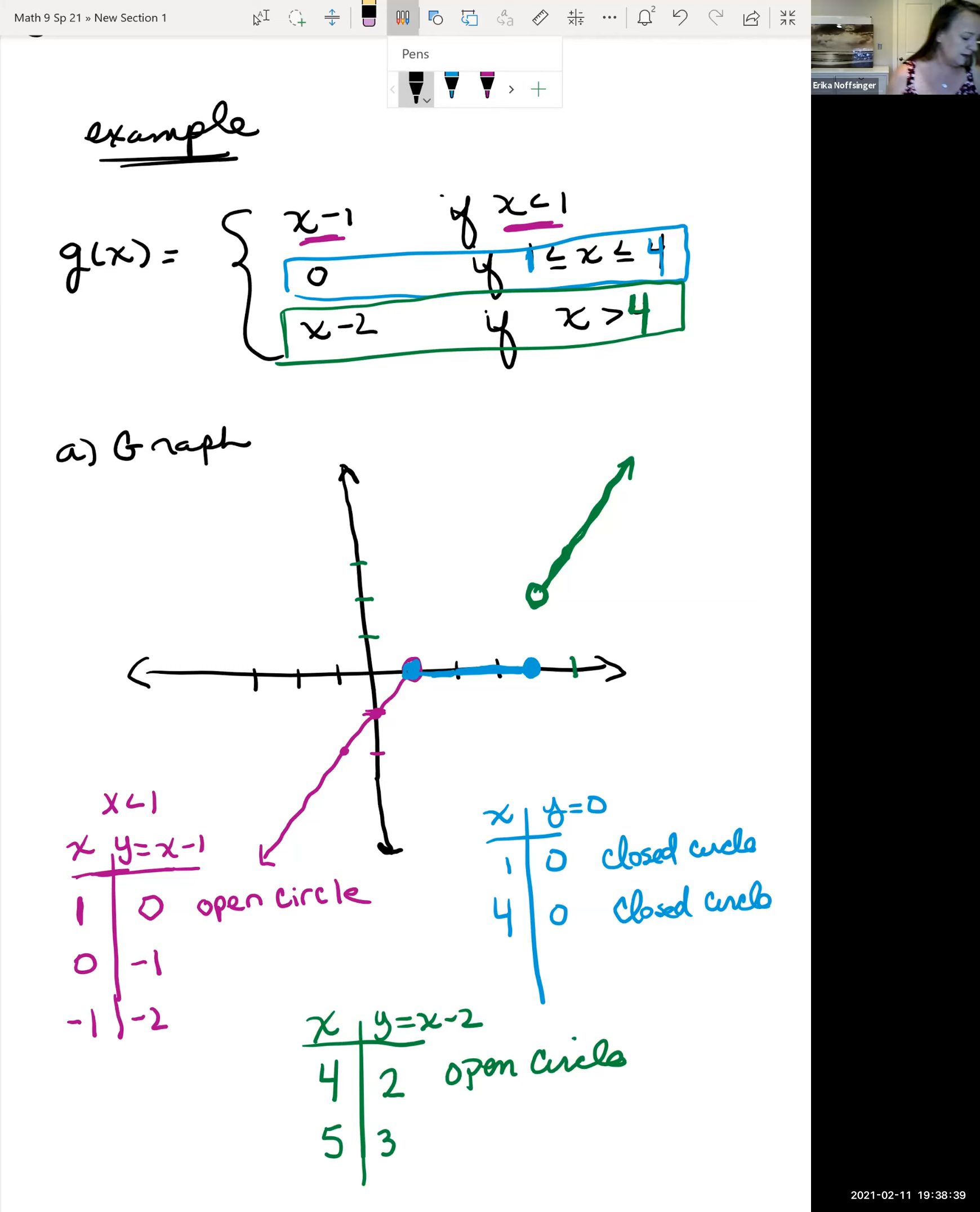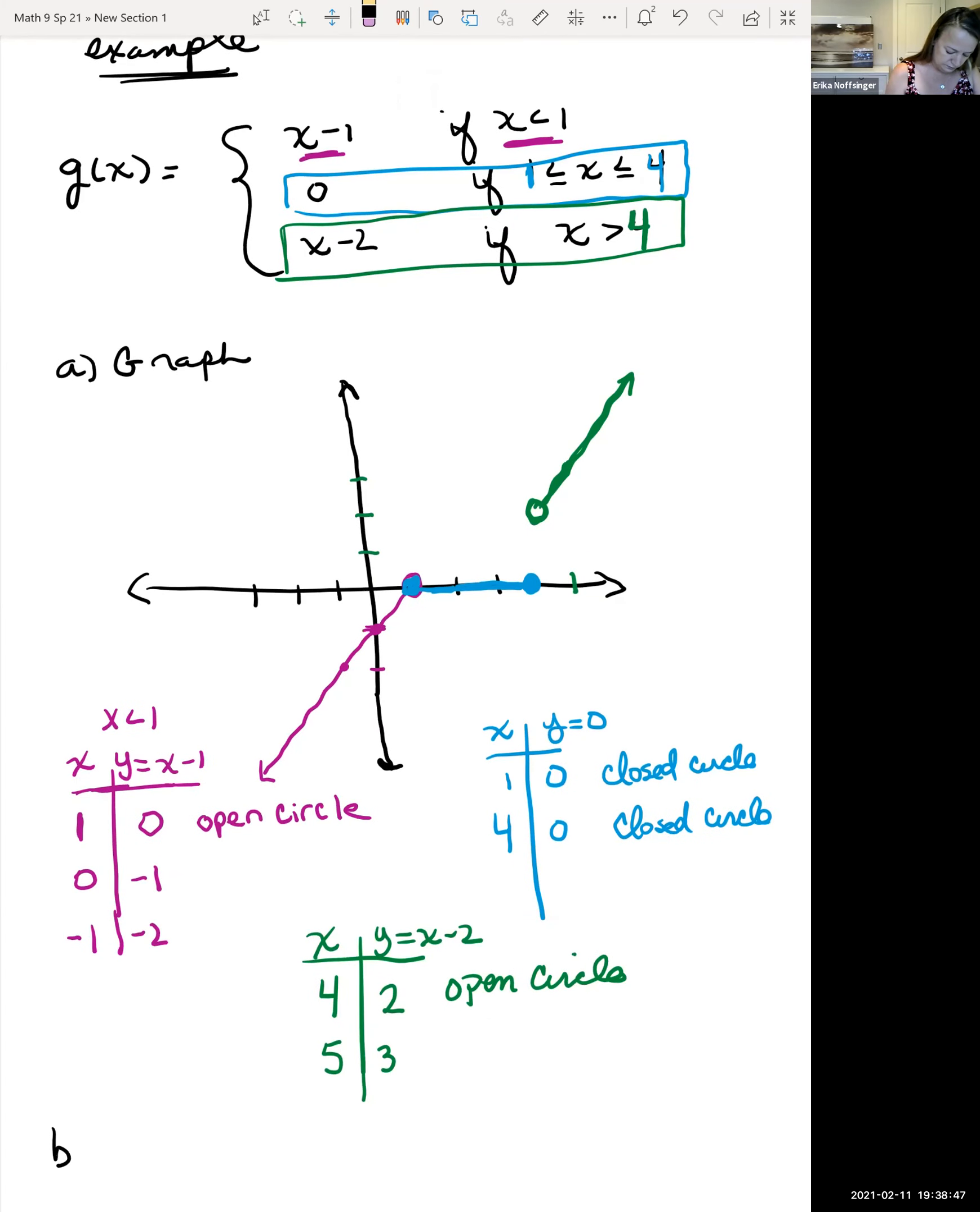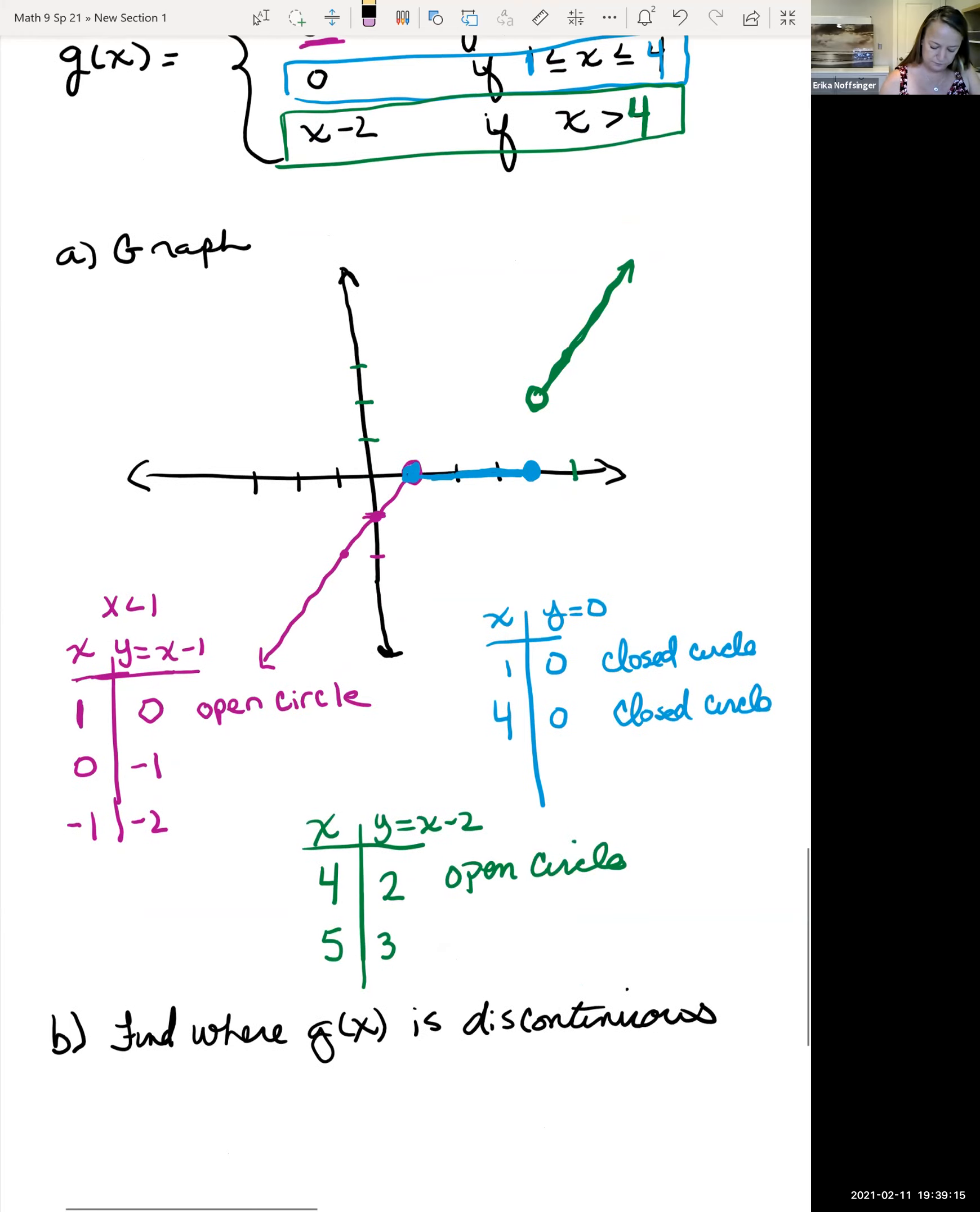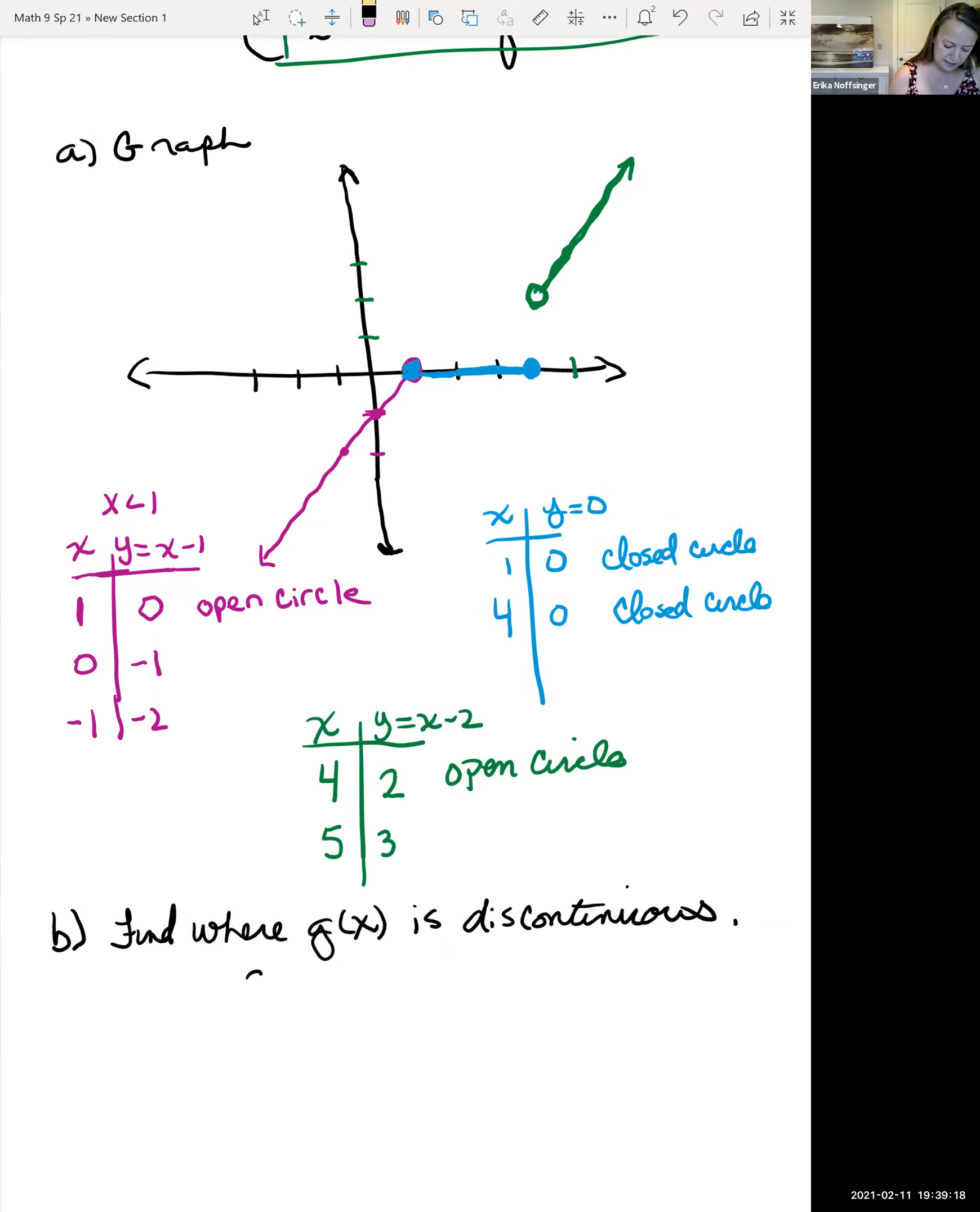Part B of the problem says find all the values where the function is discontinuous. Let's find where g of x is discontinuous. Well, because we graphed it, it's easy to see right away where it's discontinuous. I noticed that at x equals 1, we're okay because we ended up filling in that circle. We're not okay though at x equals 4. So it's discontinuous at x equals 4.